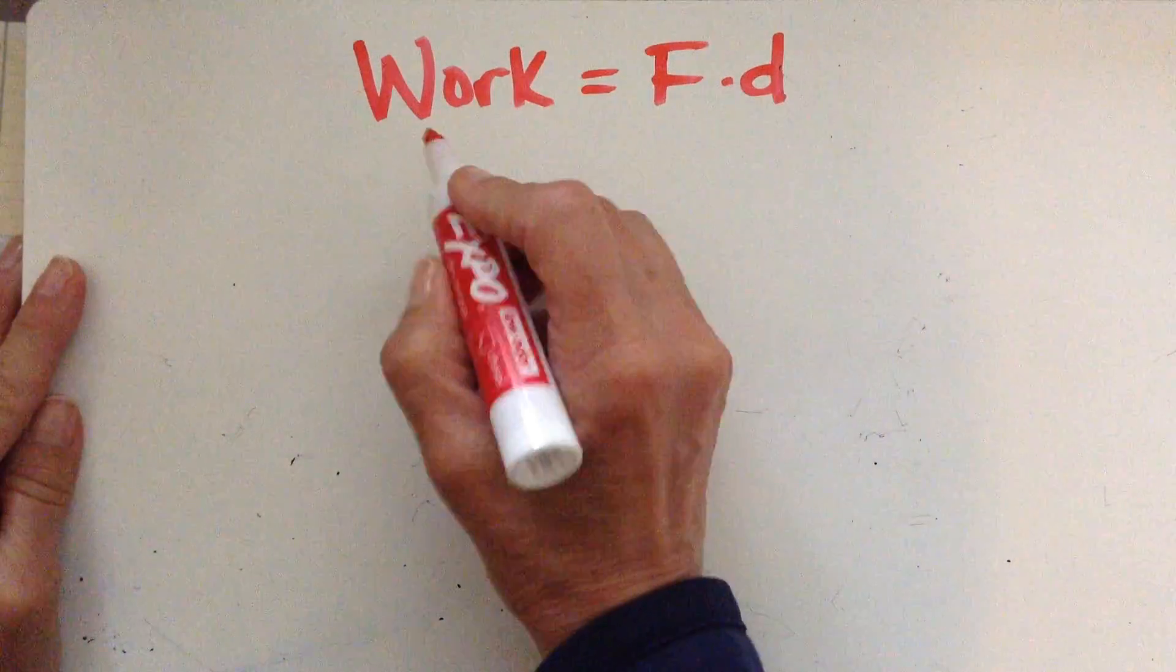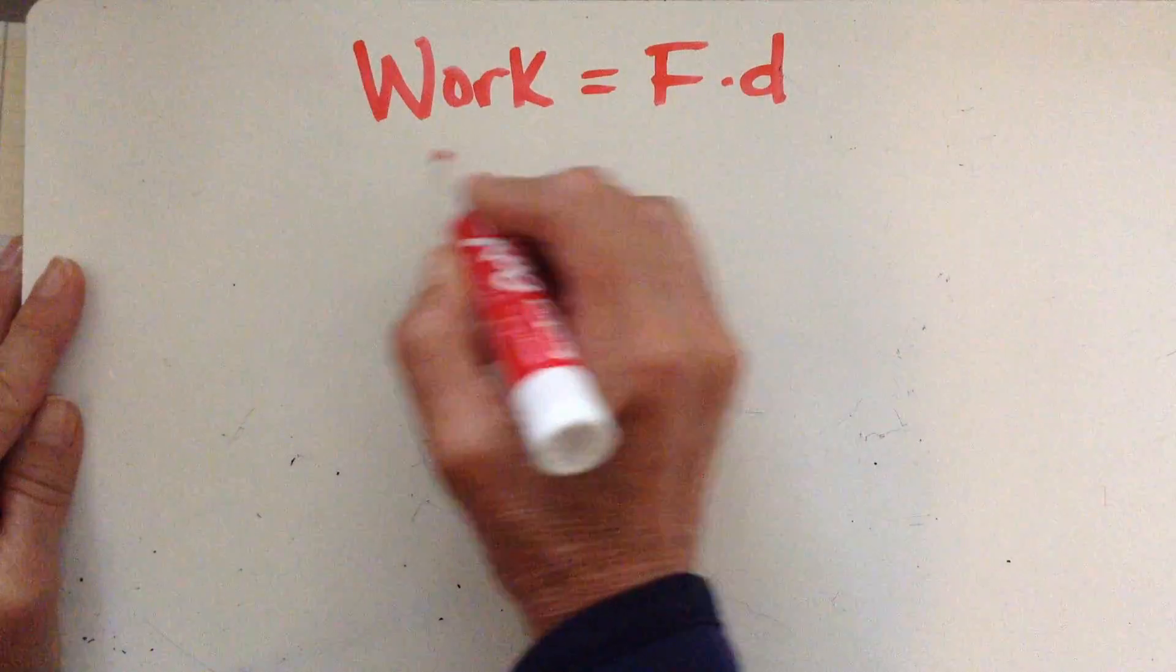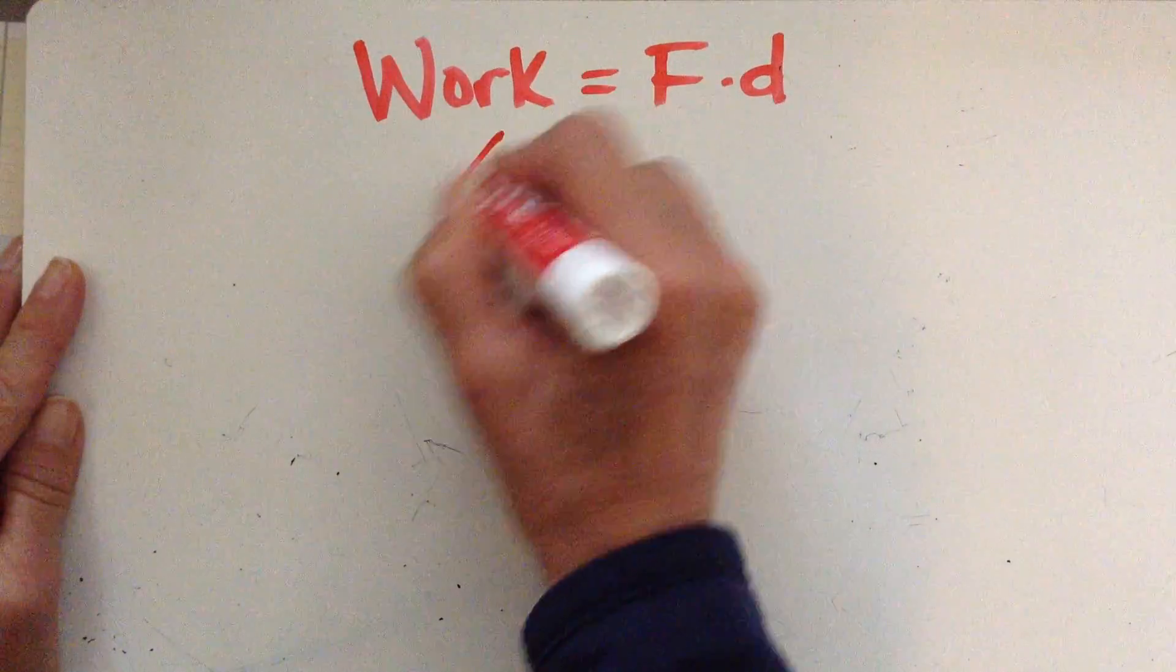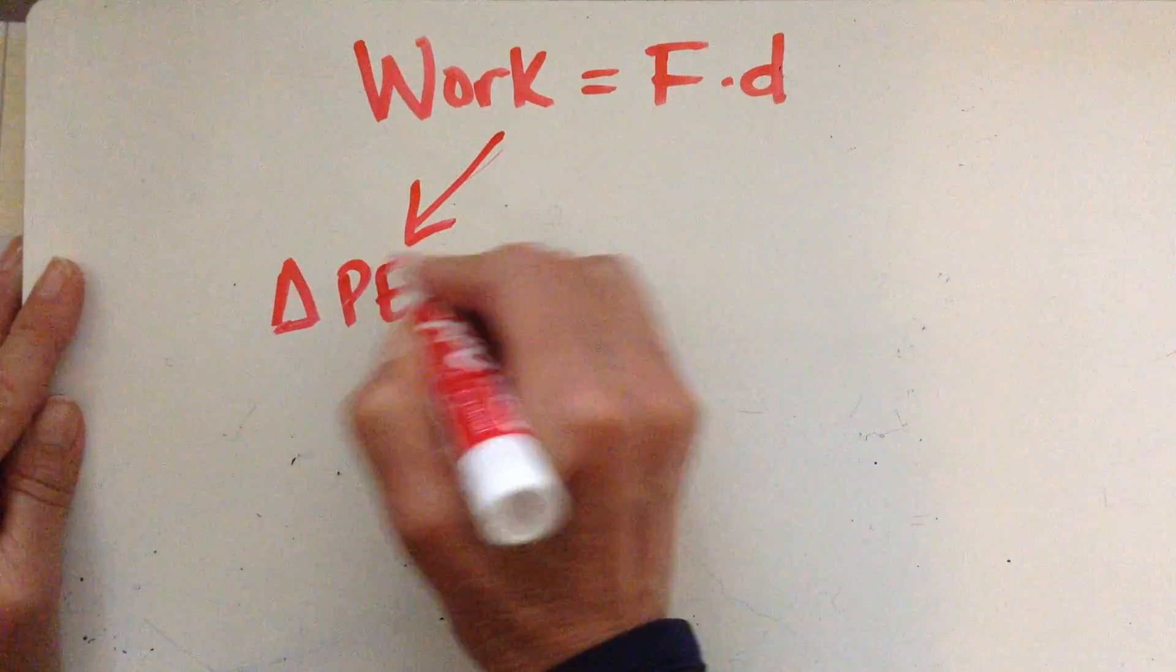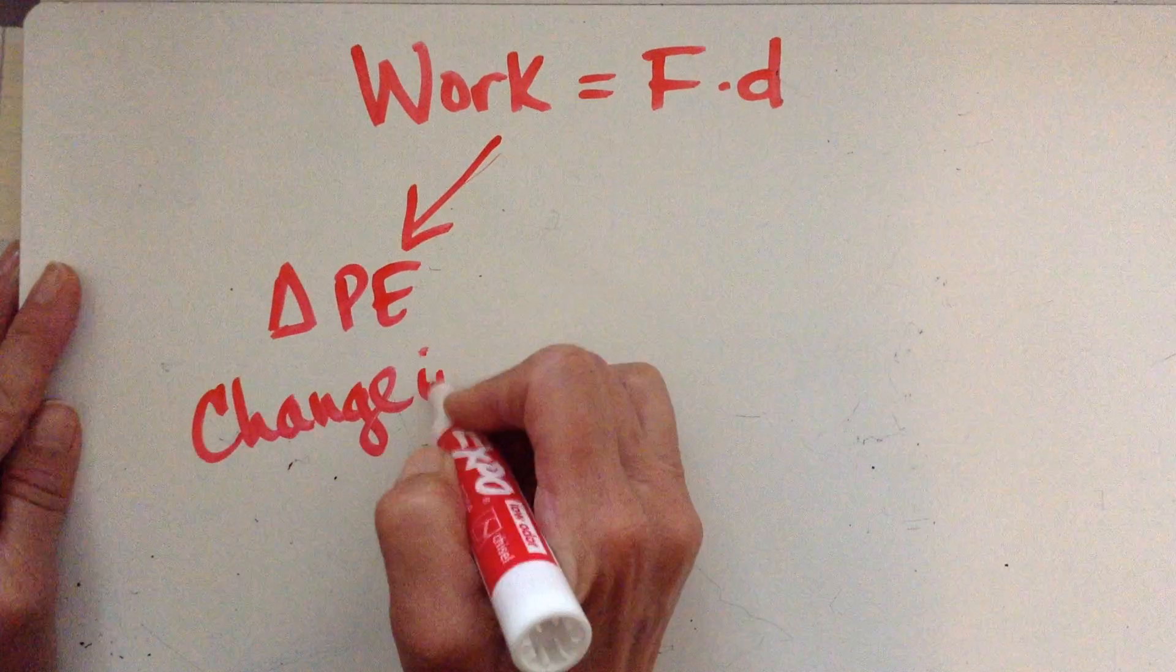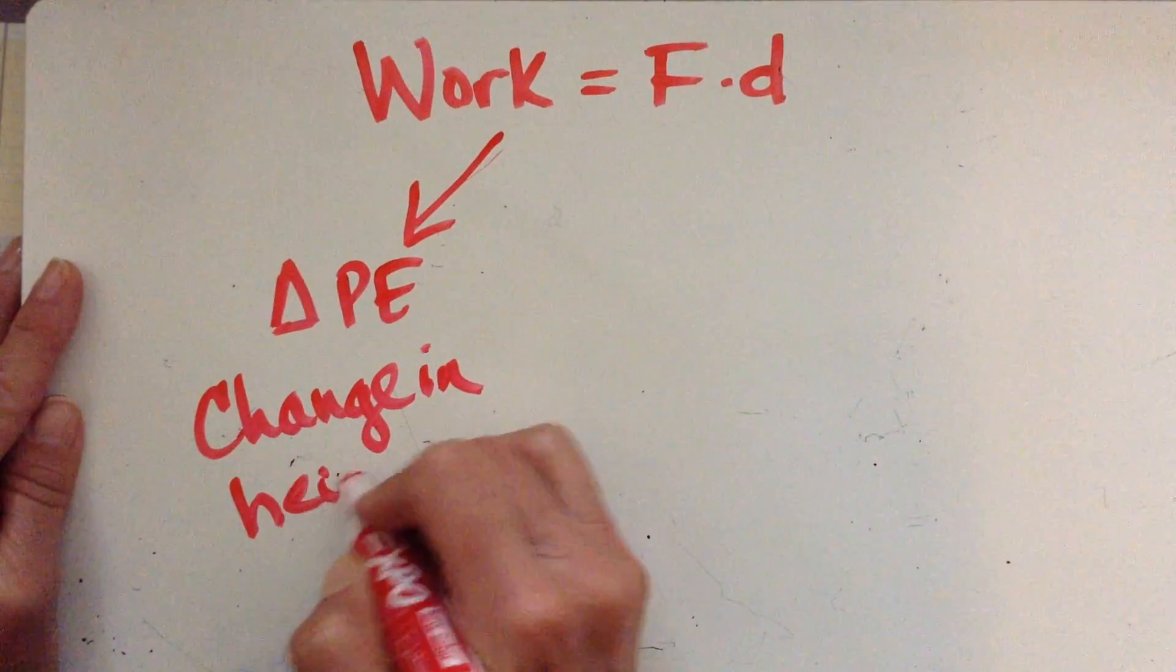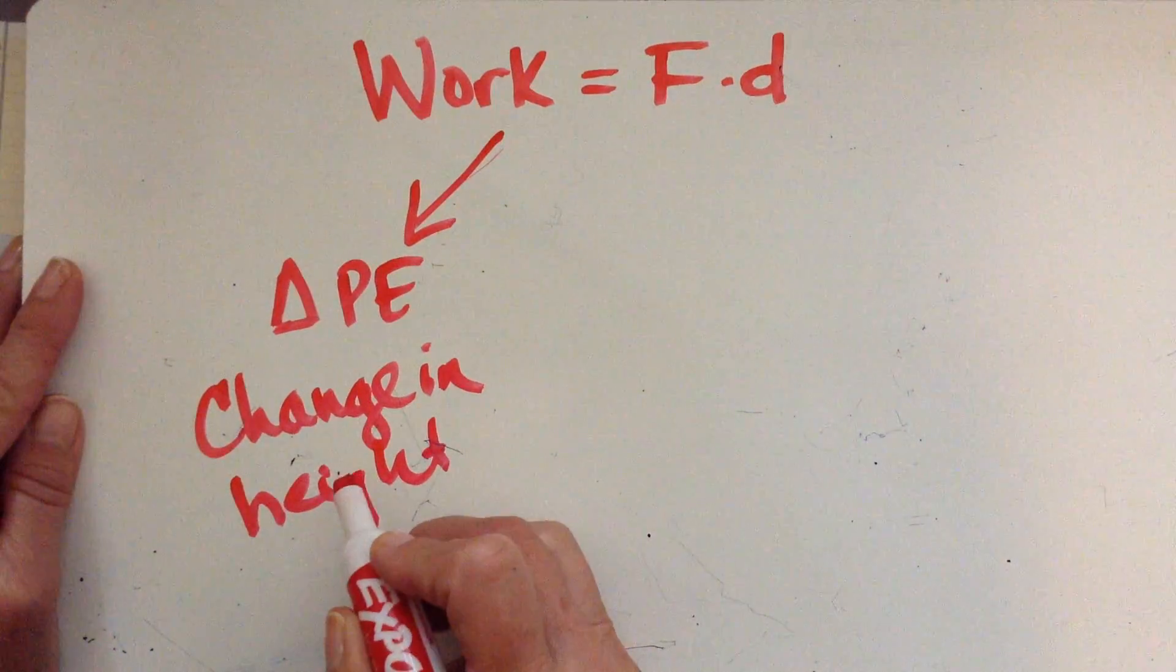So far, what we've learned is that work is going to cause a change in energy. So how does energy get changed? Well, the first one that we've looked at is a change in potential energy, and this is the one that we associate with a change in height. Again, that distance that it moves, that's the height that it changes by.